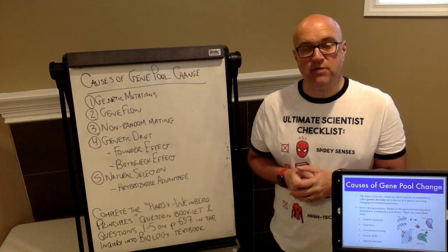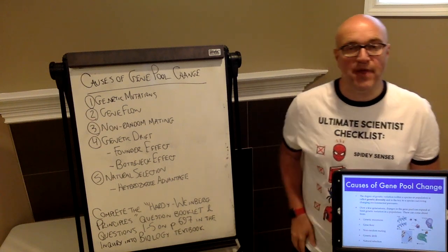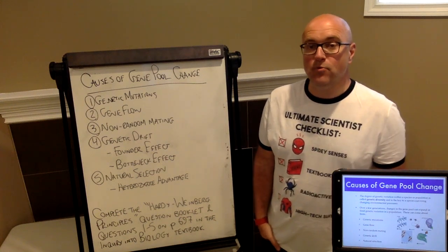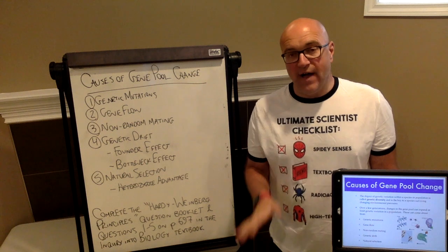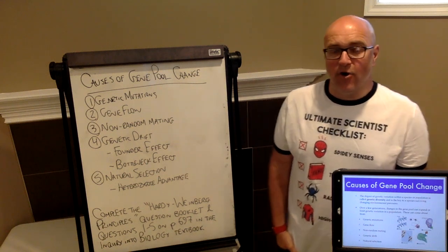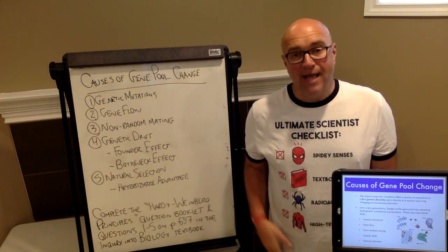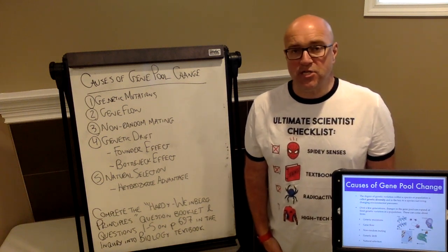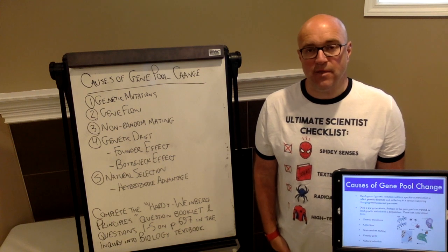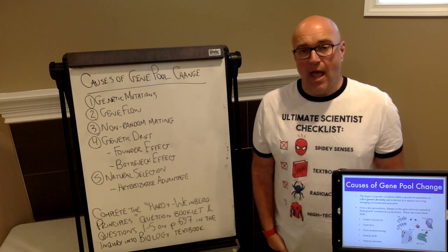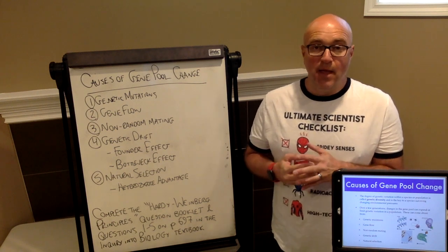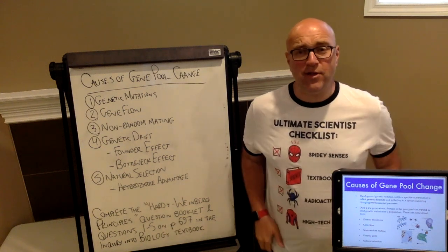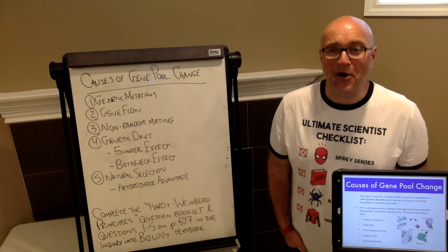But there are five conditions that must be met in order for Hardy-Weinberg to be an accurate equation. They have to have a large population, no mutations, no natural selection, no migration, and no random mating. This rarely ever happens. Generally speaking, in nature, populations do undergo changes in their gene pool configuration.